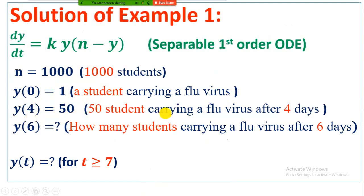After 4 days 50 students carrying a flu virus and the question is how many students carrying a flu virus after 6 days. And this is not mentioned in the problem but we should also calculate what is the status after t greater than or equal to 7.